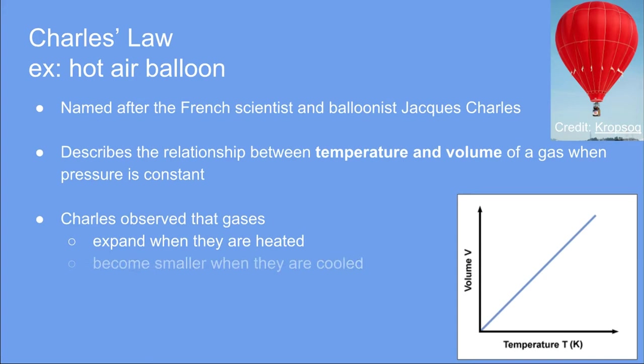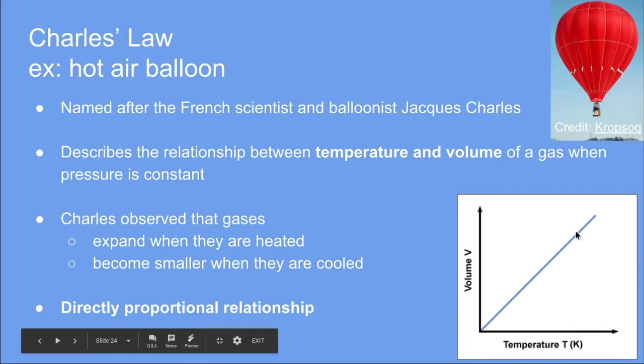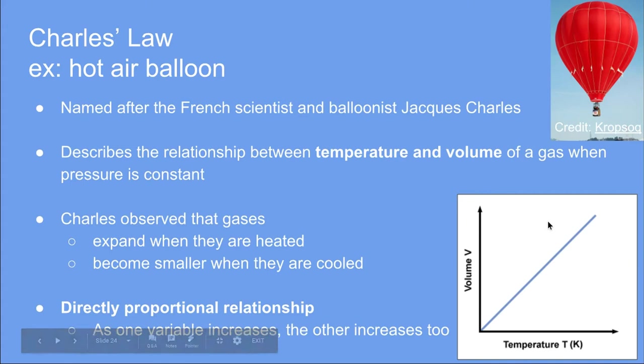That's exactly what Charles observed — when gases are heated, they expand. You don't add more gas and you don't lose any of it, but it takes up more room, and with hot air balloons, this is what creates lift. The opposite holds true as well: when gases are cooled, they reduce in size and become compressed. On a graph, as you increase the temperature, so does the volume — and as you lower the temperature, the volume decreases. This type of mathematical relationship is called directly proportional: if one value goes up, the other will too.